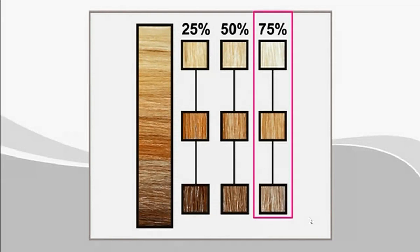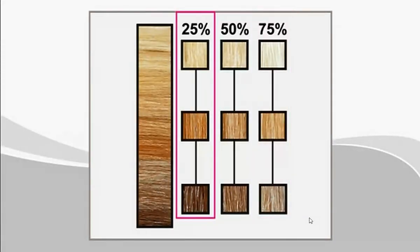As a general guide, if a client has a very high percentage of gray — 75% to 80% — the hair will appear lighter overall. In this case, apply a color that is one level darker than the desired level, since you will be working with very little pigmented hair. If your client is approximately 25% to 30% gray, apply a color one level lighter than the desired shade.